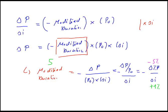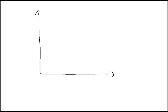If we visualize modified duration, then modified duration can be visualized as follows. I take a price-yield diagram. On the vertical axis we have the price, and on the x-axis we have the yield to maturity.